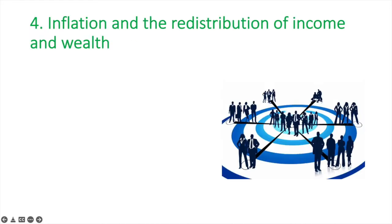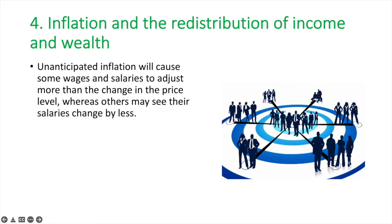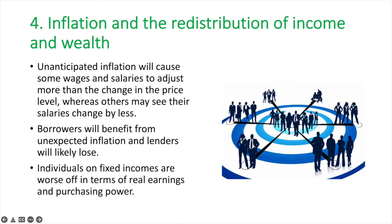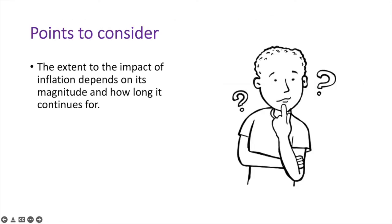Fourth is the relationship between inflation and the redistribution of income and wealth. Unanticipated inflation will cause some wages and salaries to adjust more than the change in the price level, whereas others may see their salaries change by less. Borrowers will benefit from unexpected inflation and lenders will likely lose, as borrowers repay debts with money that has lower purchasing power. If they have borrowed at a fixed rate of interest, unanticipated inflation will harm the lender. Individuals on fixed incomes are worse off in terms of real earnings and purchasing power. The extent of the impact depends on its magnitude and how long it continues for.